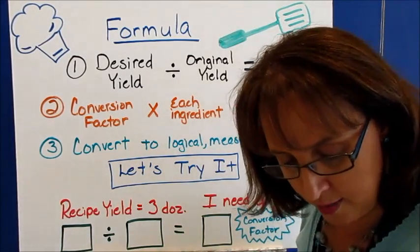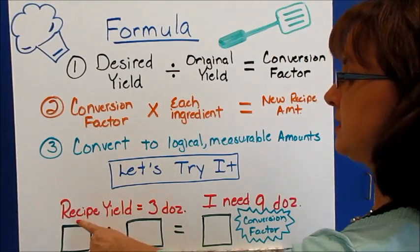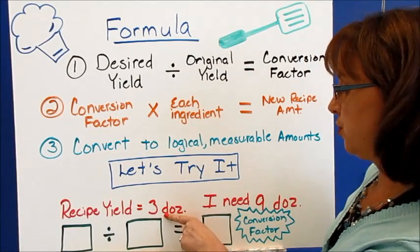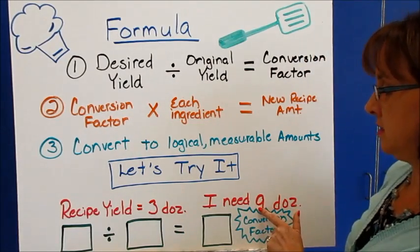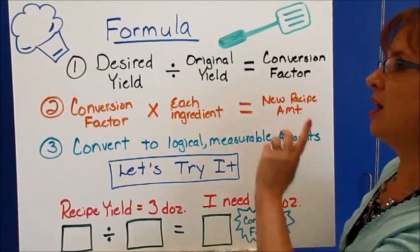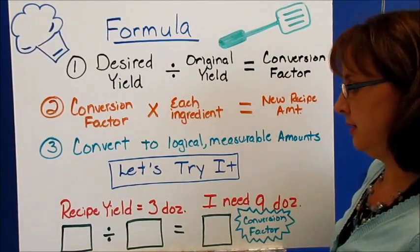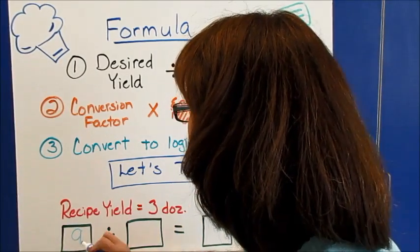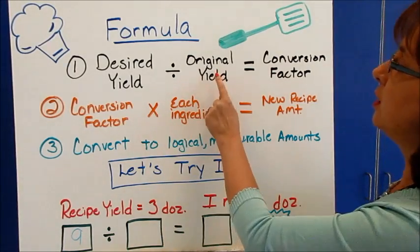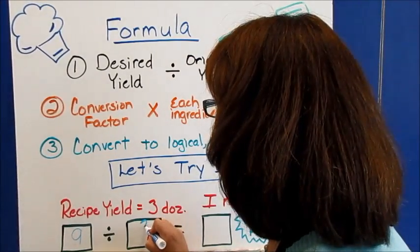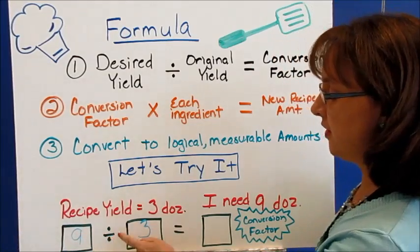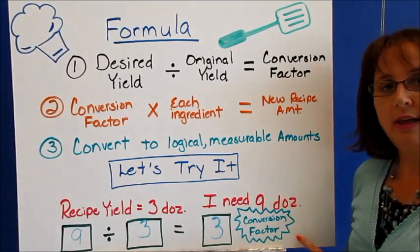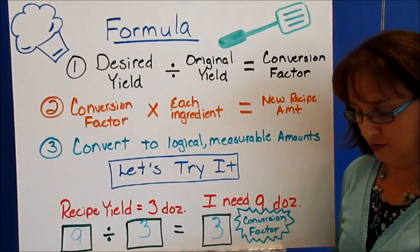Let's try it one more time. This time our recipe yield is three dozen — we're making sugar cookies and the recipe makes three dozen, but we need nine dozen. Our desired yield is nine dozen. We take nine dozen divided by our original yield of three dozen — nine divided by three equals three. So our conversion factor is three.